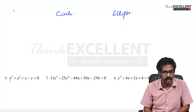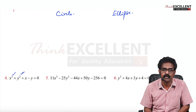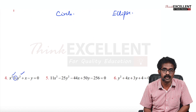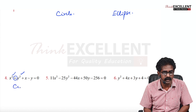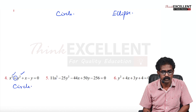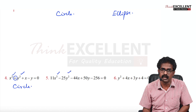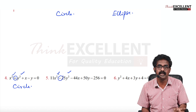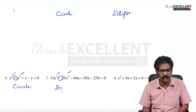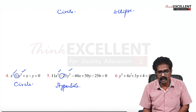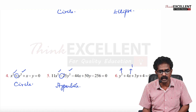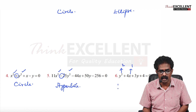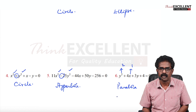Fourth one: X degree 2, Y degree 2, sign in between is plus. Coefficients are both 1 — equal — so it represents a circle. Fifth question: X degree 2, Y degree 2, sign in between is minus — so no need to check coefficients; only when the sign is plus do you check coefficients. Here it is minus, so it is hyperbola. Last one: X degree 1, Y degree 2 — so it is a parabola.